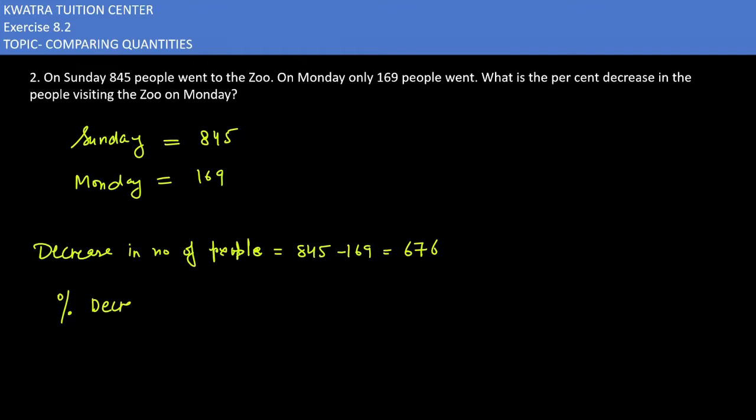Now you have to find the percentage decrease. It would be equal to change in value or decrease in value. So first of all, you will get 676. And how many people went on Sunday? 845. So that will be in denominator. Multiply by 100.